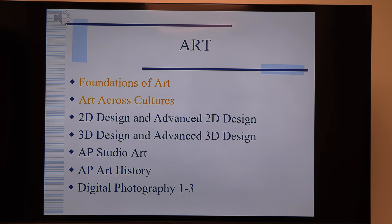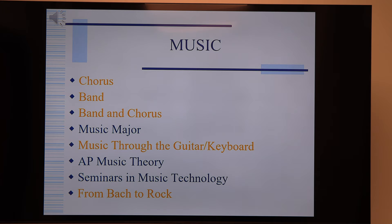Music offerings: students can take just chorus, just band, or combine both band and chorus — all for one credit. There's also music through guitar and keyboard, which is especially important for students potentially majoring in music in college. There's also a new elective called From Bach to Rock, the history of music, offered to ninth graders. Students can continue with chorus, band, and other music options all four years at Conrad Weiser.